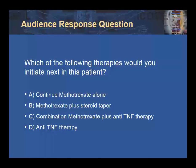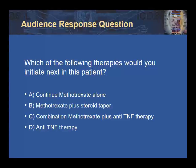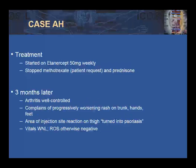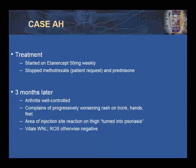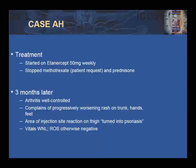Which of the following therapies would you initiate next? A, continue methotrexate alone; B, methotrexate plus another steroid taper; C, continue methotrexate but add an anti-TNF inhibitor; or D, add anti-TNF therapy as monotherapy? We chose to add anti-TNF therapy as monotherapy, respecting the patient's wish to discontinue methotrexate. She was started on etanercept 50 mg once weekly, and methotrexate as well as prednisone were stopped. Three months after initiating etanercept, she had outstanding control of her joint symptoms.